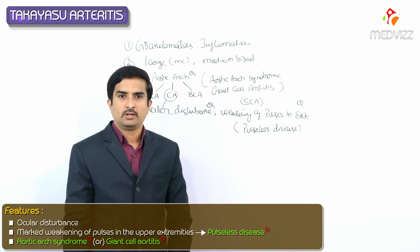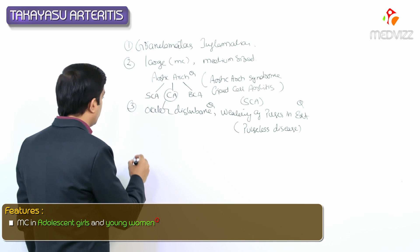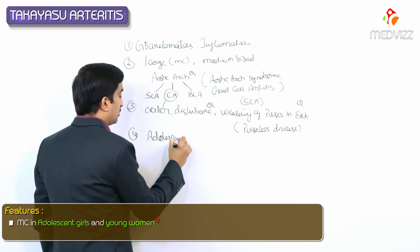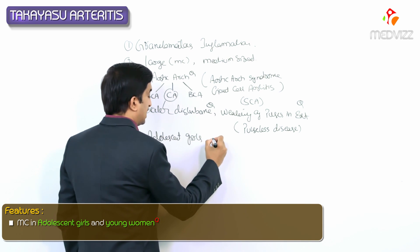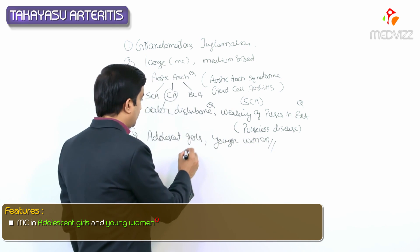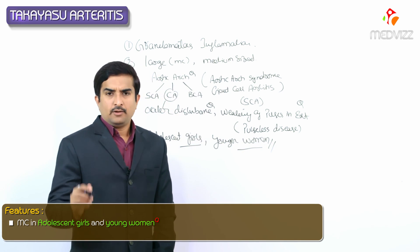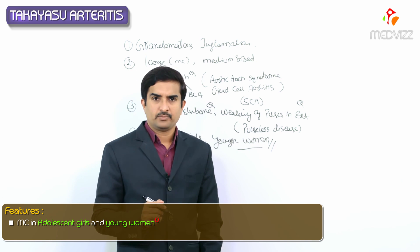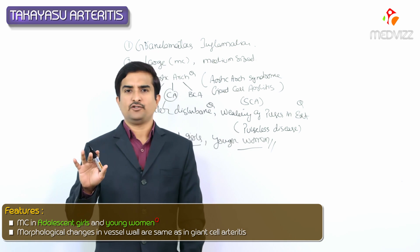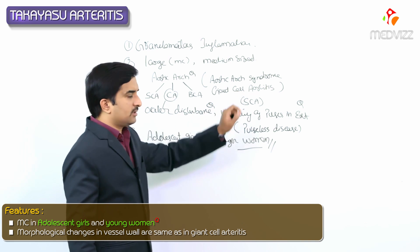Takayasu arteritis is more common in adolescent girls as well as in younger women. When we look at the morphological changes in the vessel wall, they are similar to those of giant cell arteritis — that is the reason we also give it the name giant cell aortitis.